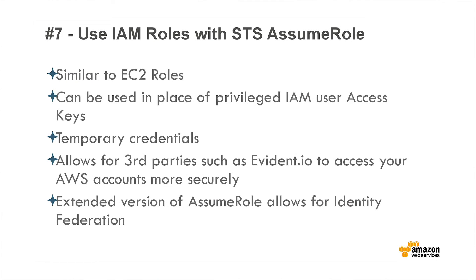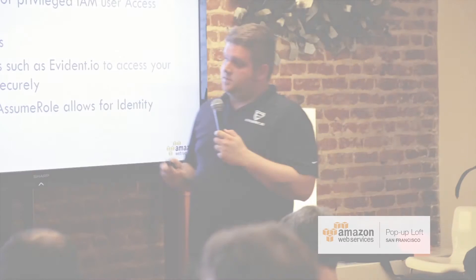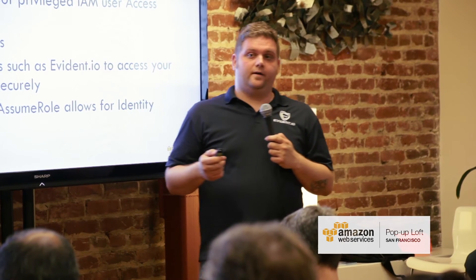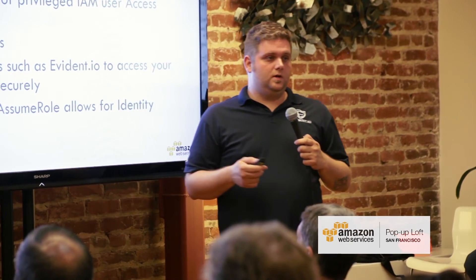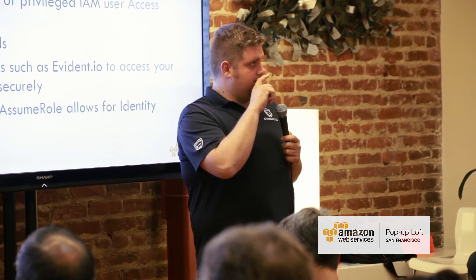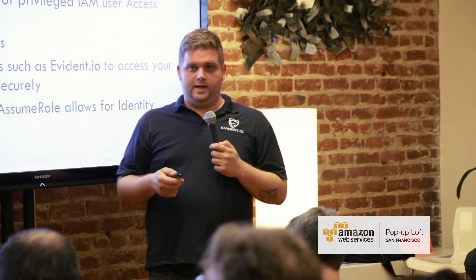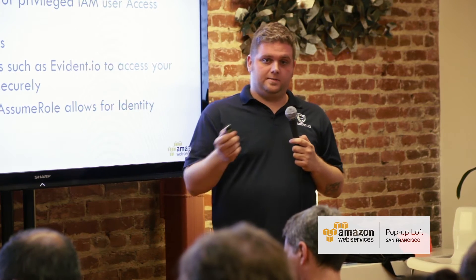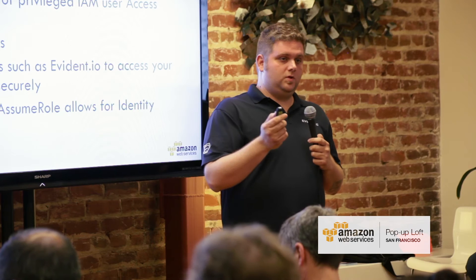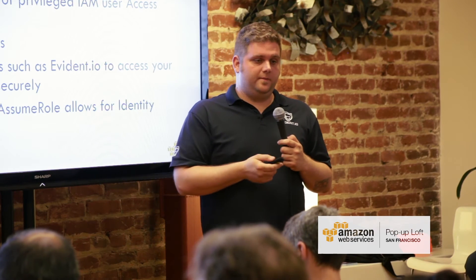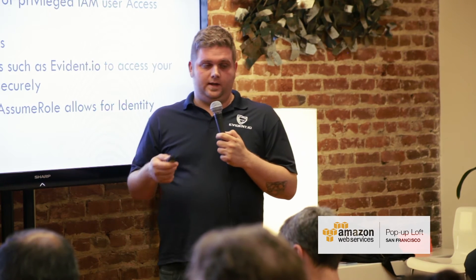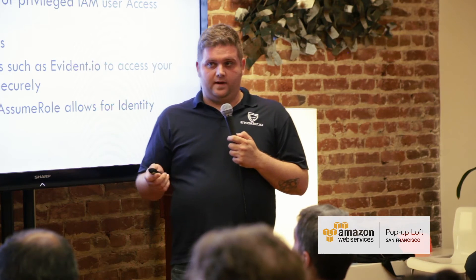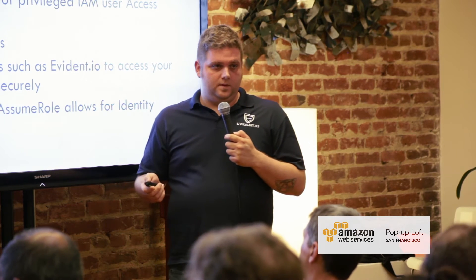Number seven: use IAM roles with STS assume role. If you have a third-party provider helping you manage or secure your Amazon infrastructure, do not give them your API keys. Instead, use IAM roles and assume roles so the third party can make API calls and assume your role — a role that you restrict. You control what they have access to, and if you want to revoke access, simply remove the role without any key management issues.